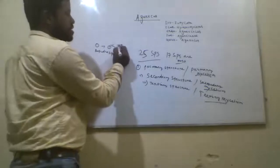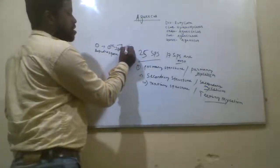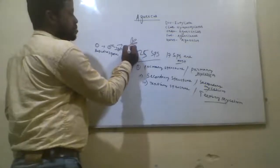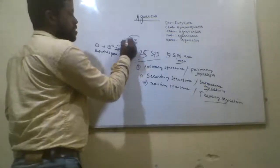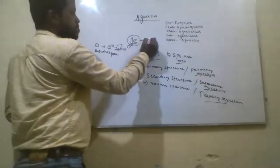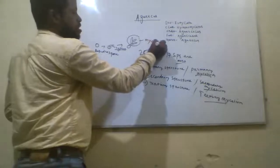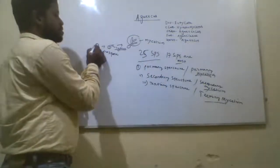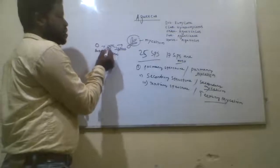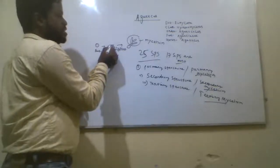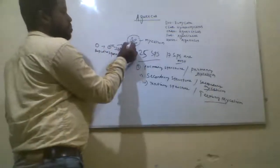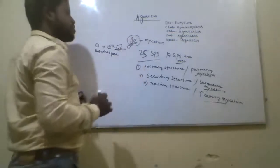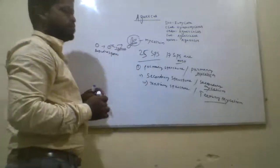At a later stage this hypha differentiates to form its branches, and this structure we call mycelium. If the basidiospore germinates and produces a single mycelium structure and develops like this, then we call it primary mycelium.